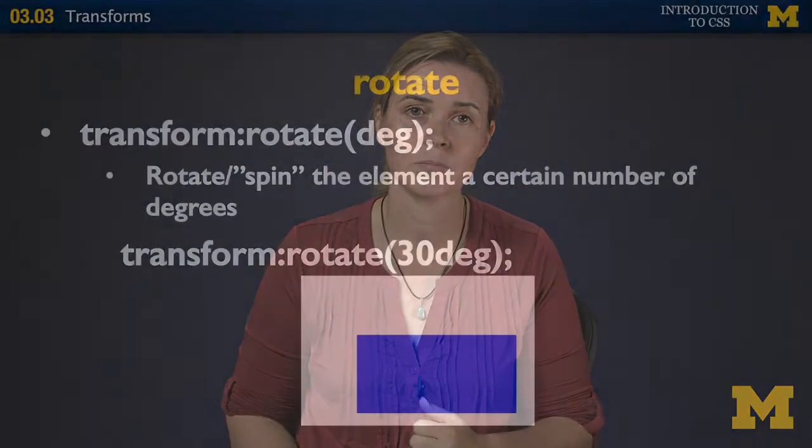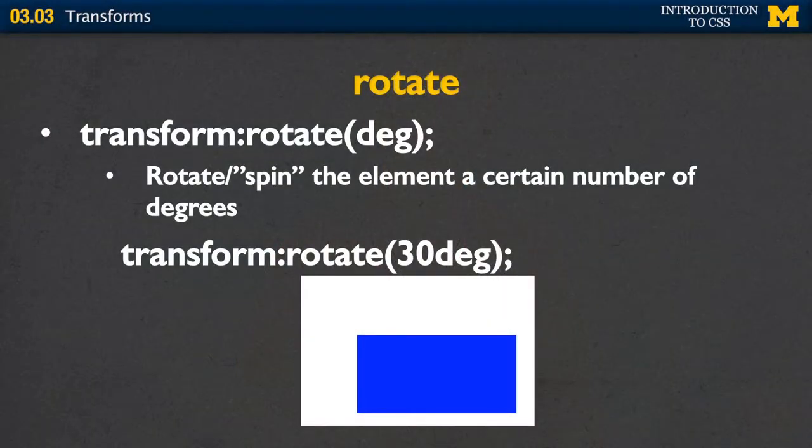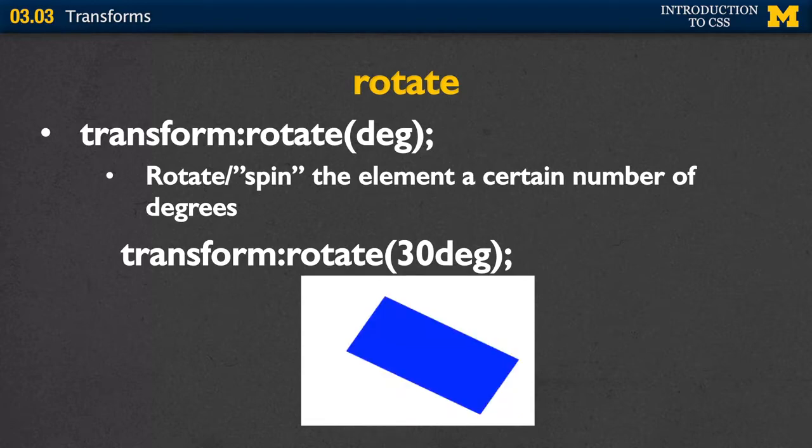The next option is rotate. When you rotate something you're spinning the element a certain number of degrees — you don't see the spin, just the end result. Here I have an element and I'm going to tell it to rotate by 30 degrees — from here to here. It's really important that you remember to put DEG. If you just put 30, many browsers won't accept it. Make sure you give it a number like 30, 90, or 80, followed by the degree unit.